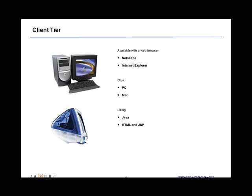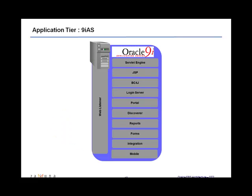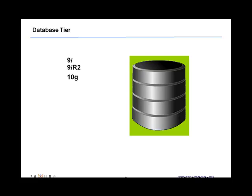Using the J-initiator, Oracle was able to display Forms over the web. In the application tier is where you have all the Forms server, the Report Server, Discoverer, and all the other technology middleware software required for the application. The database server, or database tier, of course, runs the database software.